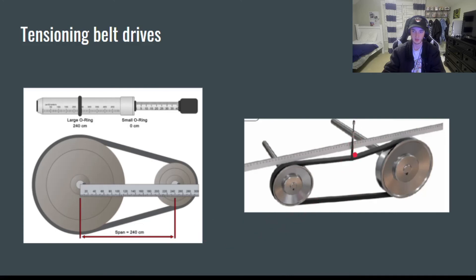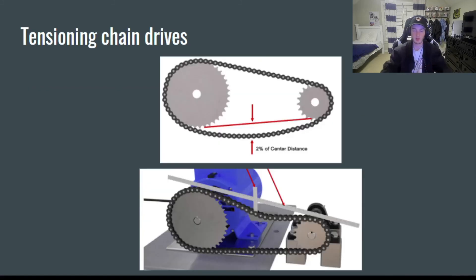Press down until the large O-ring gets to the zero mark. So as you press down, this thing's going to move down to the zero mark. And as you do that, this small O-ring is going to move up the scale and it'll give you a force reading. After that, all you have to do is look at a chart and see whether or not the force is cool and good.